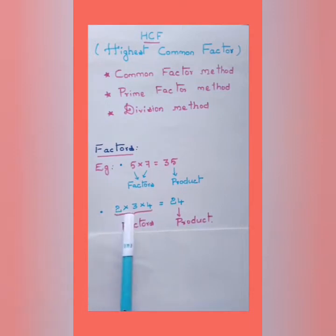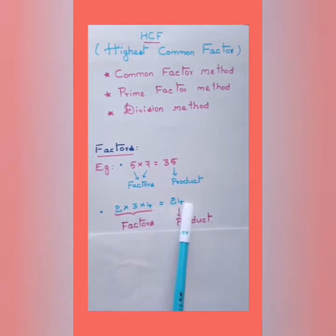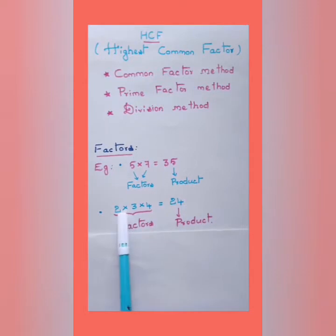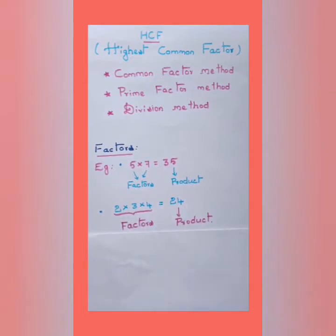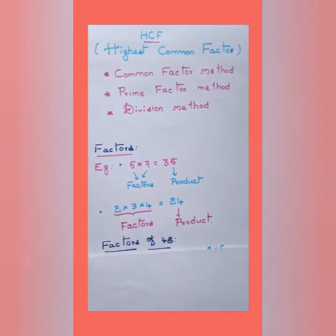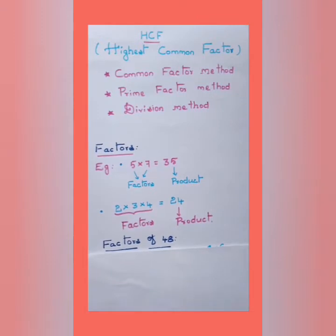Another example: 2 × 3 × 4 = 24, where 2, 3, and 4 are the factors and 24 is the product. Now let us consider the single number 48 and find out all the factors of 48.